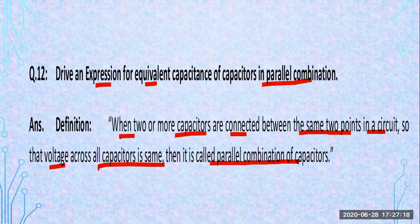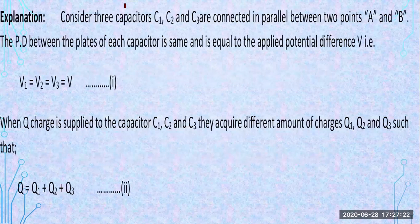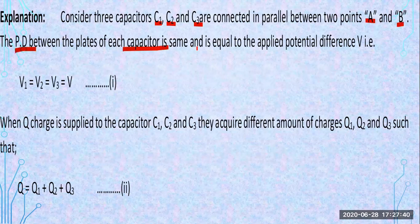The potential difference in case of series combination is different. For explanation, consider three capacitors C1, C2, C3 connected in parallel between two points A and B. The potential difference between the plates of each capacitor is the same because both plates are commonly connected to the same position.